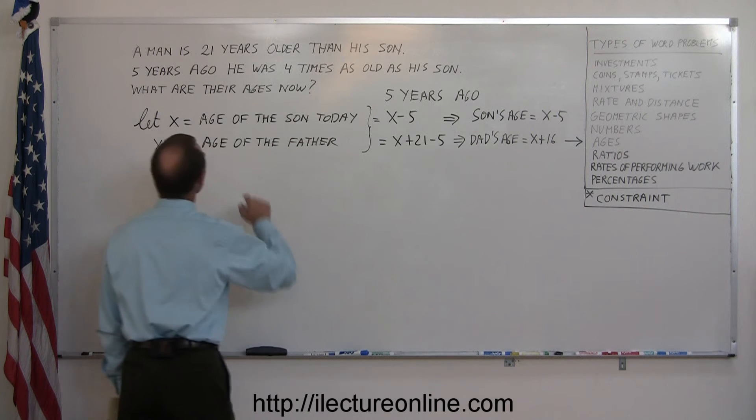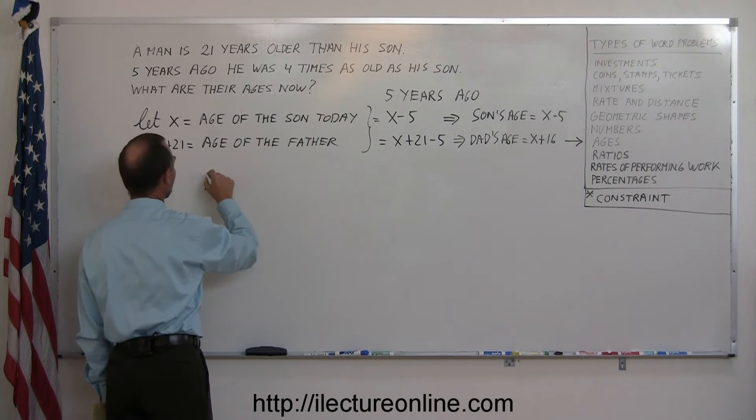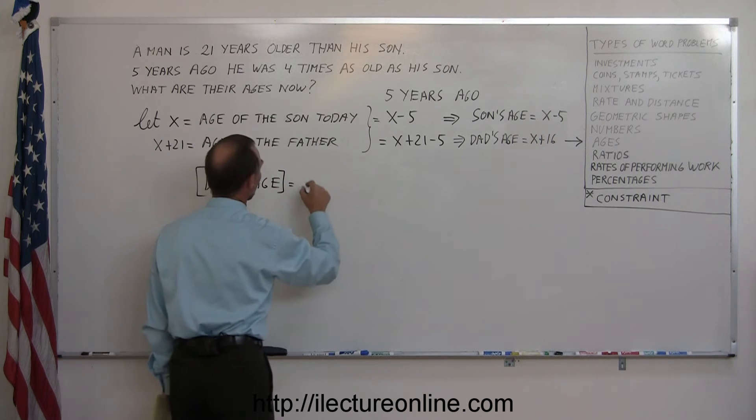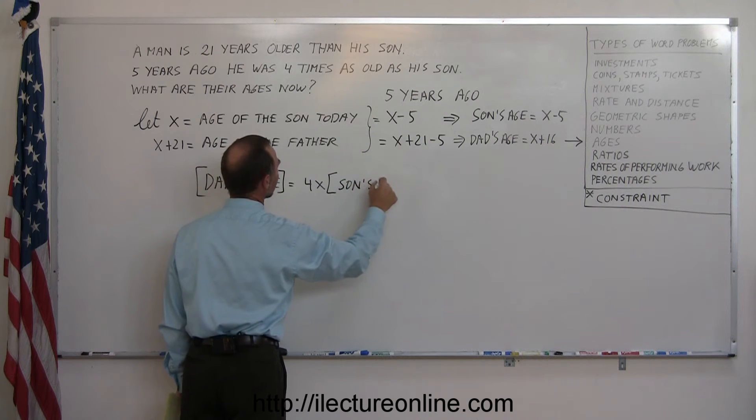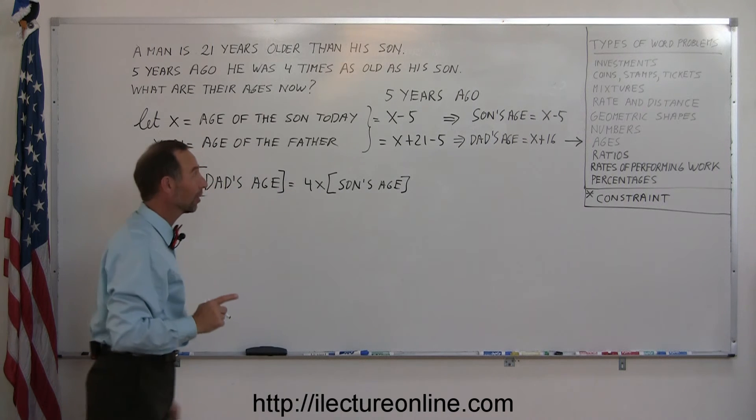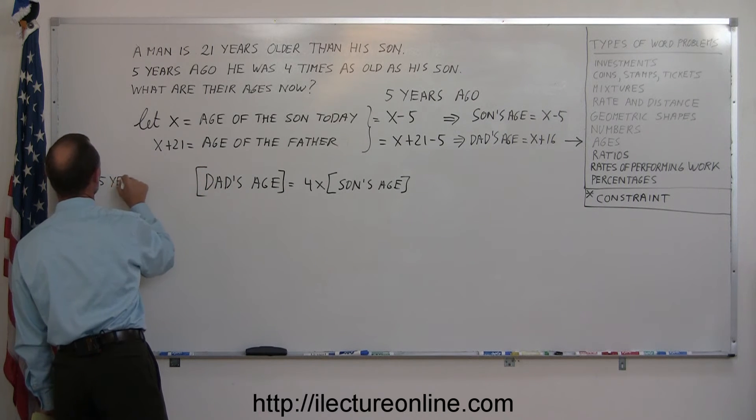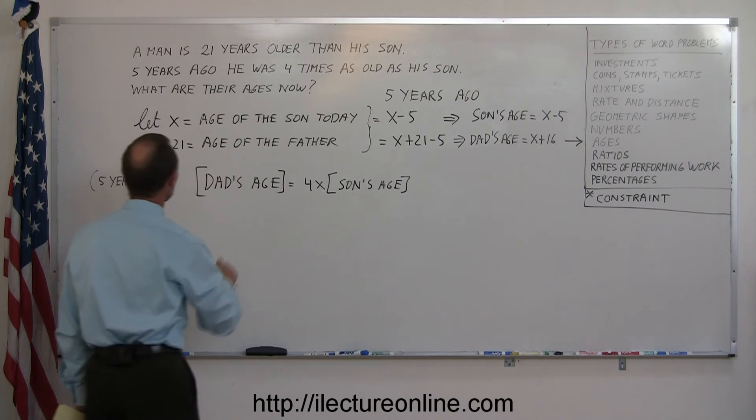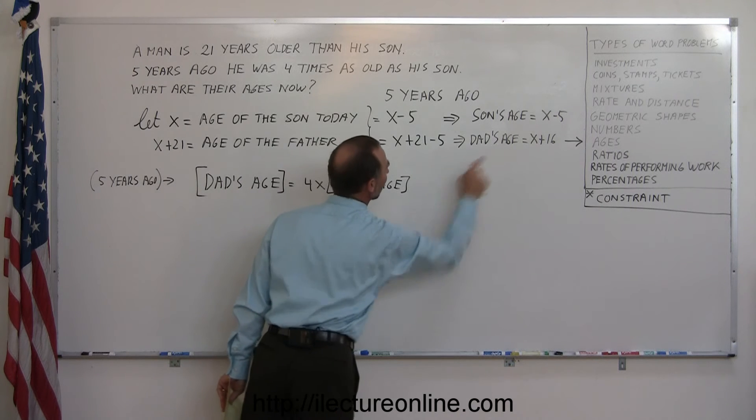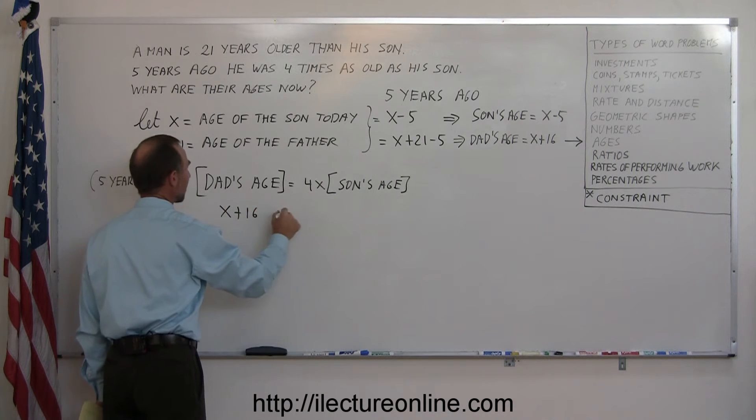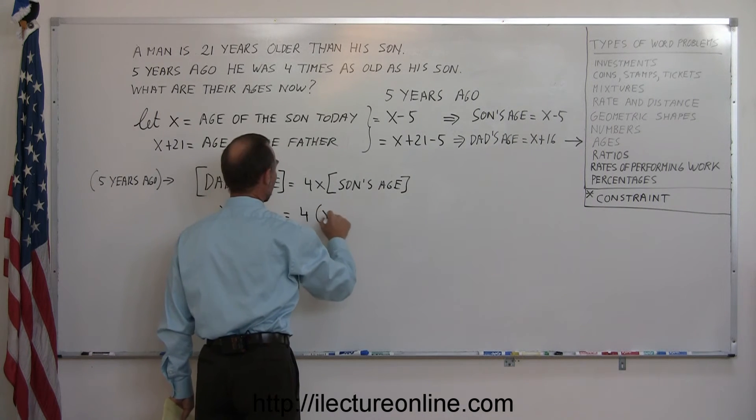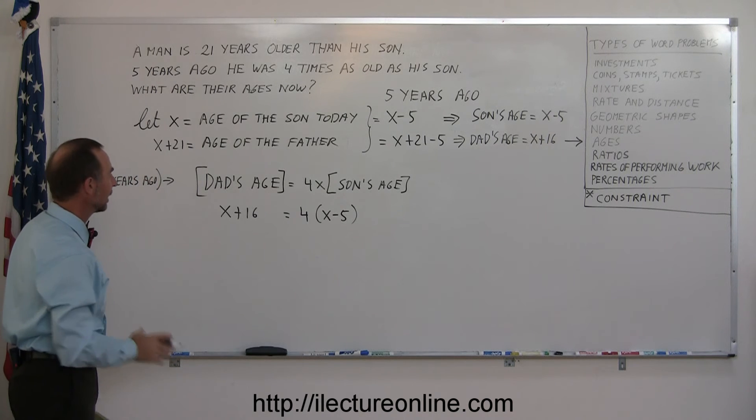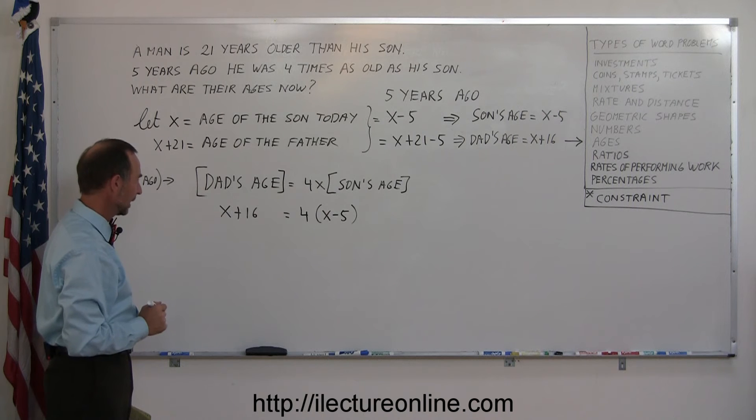All right. It says that five years ago, he was four times as old as his son. So the dad's age is equal to four times the son's age. And again, remember, this was five years ago. Dad's age is four times the son's age. So what was the dad's age five years ago? Dad's age was x plus 16. So we replace dad's age by x plus 16. And the son's age five years ago was x minus five. So that would be four times x minus five. Now we have replaced the English sentence into an equation, into a linear equation with the variable x. And now we can go ahead and solve that equation like we normally do.